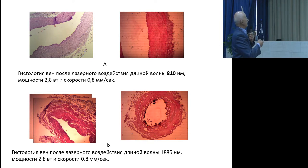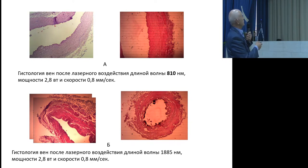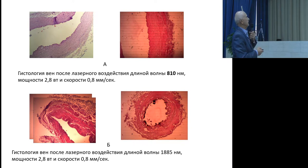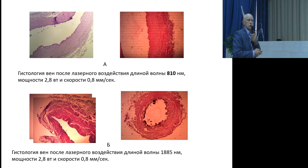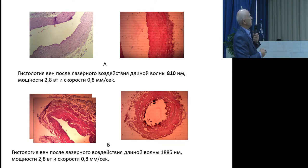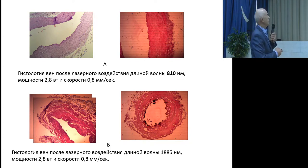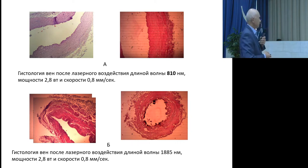This is the histology when the wavelength is 810 nanometers — you can see the lumen of the vein is still present, and only the intima is a little thicker. For comparison, at a wavelength of 1,885 nanometers, the vein is totally destroyed — the differentiation of the muscle sheath is not observed. This vein can be easily and quickly obliterated.